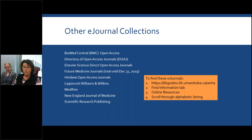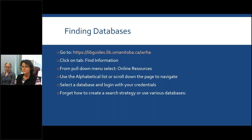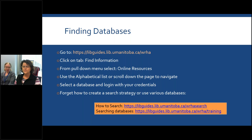We do have other e-journal collections as well. You would find them the same way as before. Now I'm going to pass it over to Nicole who will talk about finding databases. In addition to our various e-journal collections, we also have a set of databases that index all kinds of different content, such as books and journals, as well as videos, theses, patient education resources, and other materials. To find these from our homepage, you would click on find information and then select online resources, and that'll get you to our big online resources list.